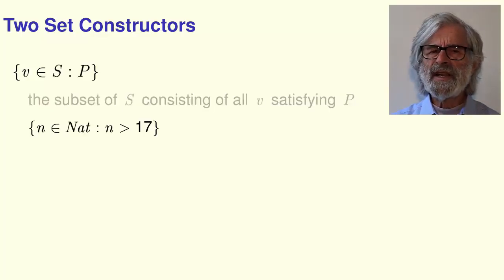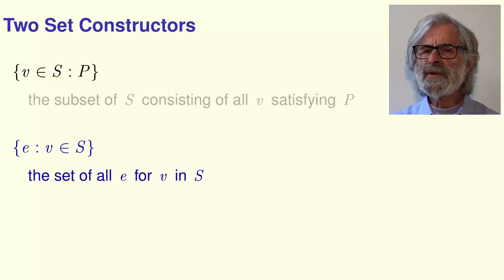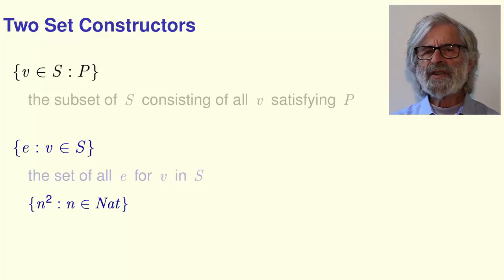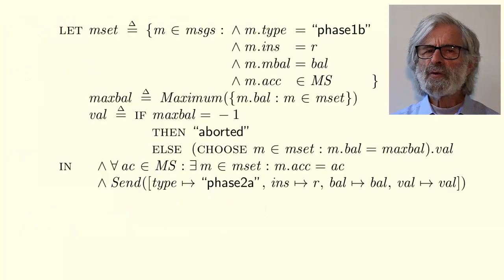For example, this expression equals the set of all natural numbers greater than 17. The second constructor has the form expression e colon variable v in set s. It's the set consisting of all values assumed by the expression e when v is an element of s. For example, this expression equals the set of all squares of natural numbers.